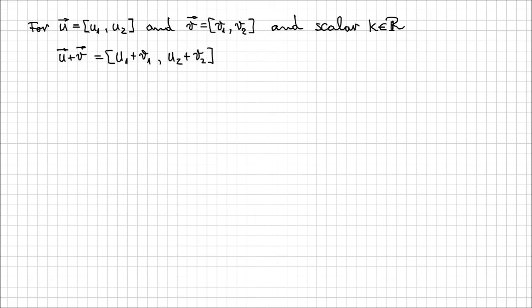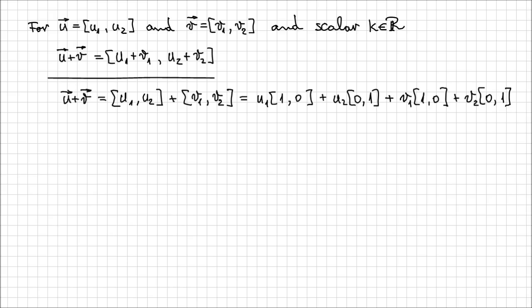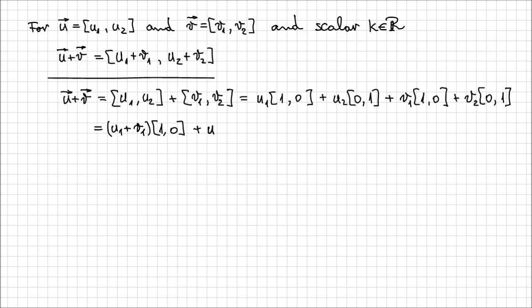Let's see exactly how we can arrive at that conclusion. Taking the sum of u plus v step by step: u is [u1, u2] plus v which is [v1, v2]. I decompose each vector into its horizontal and vertical components: u1 times [1, 0] plus u2 times [0, 1], and the same for v — v1 times [1, 0] plus v2 times [0, 1]. You notice [1, 0] is a common factor for two terms, while [0, 1] is a common factor for the other two. Factoring this out, I'm left with (u1 + v1) times [1, 0] plus (u2 + v2) times [0, 1]. So the vector is [u1 + v1, u2 + v2] — exactly what the formula states.